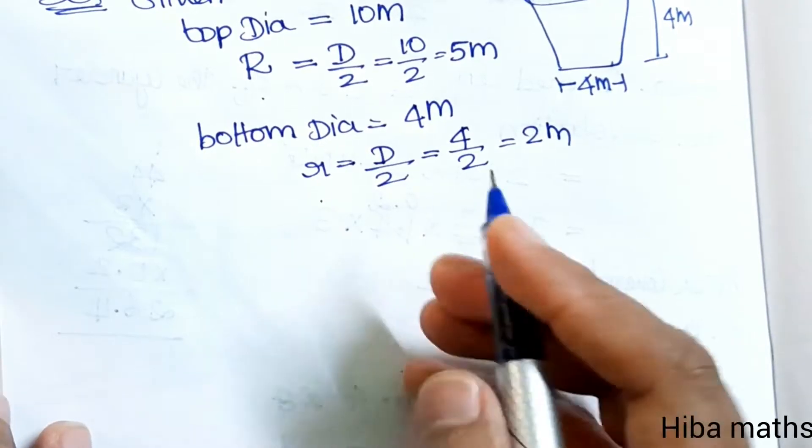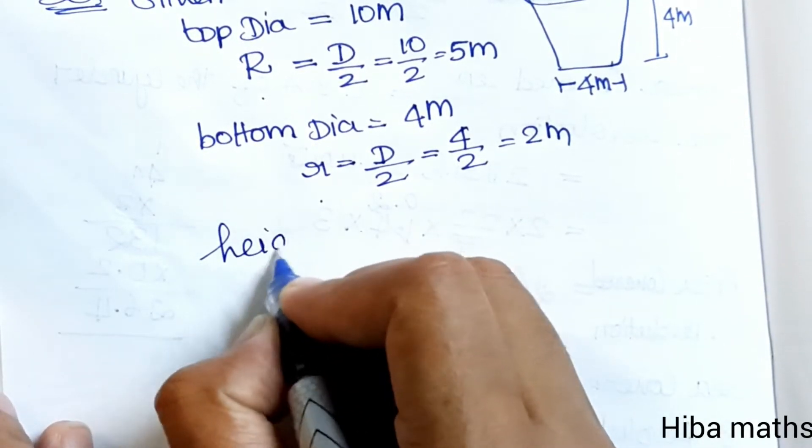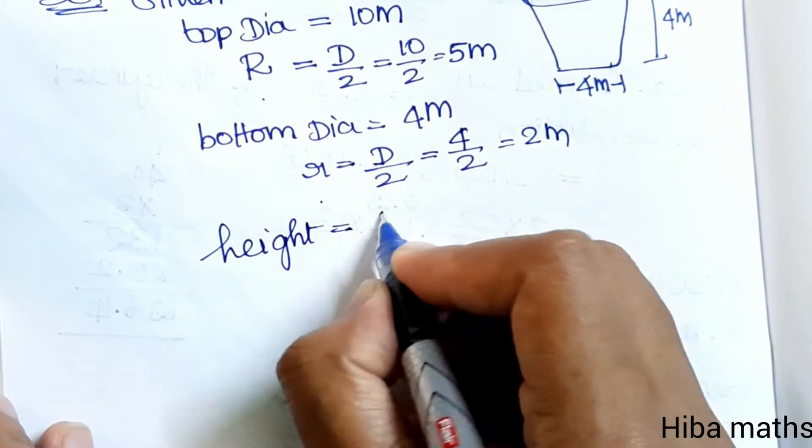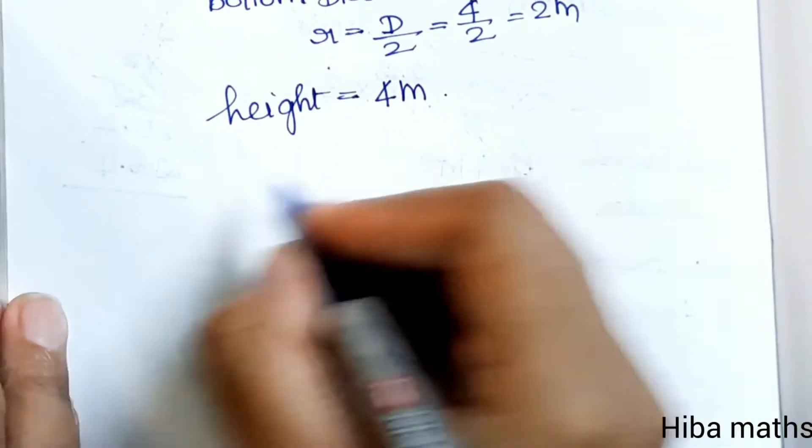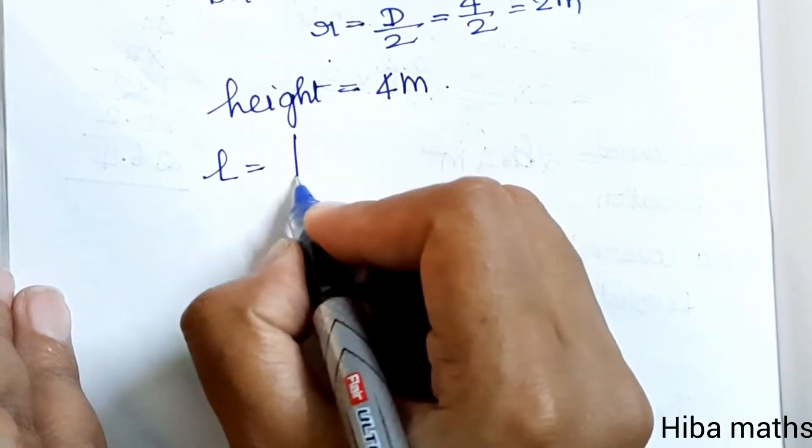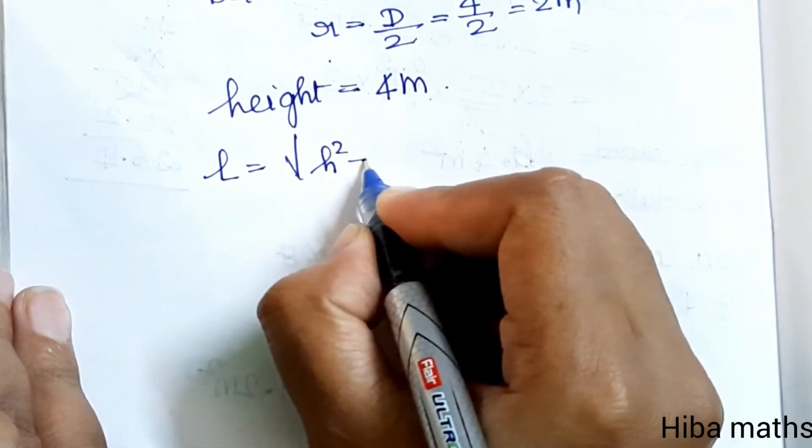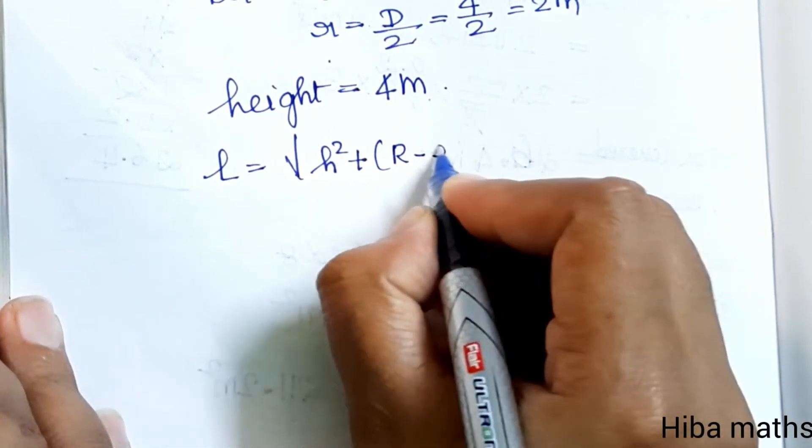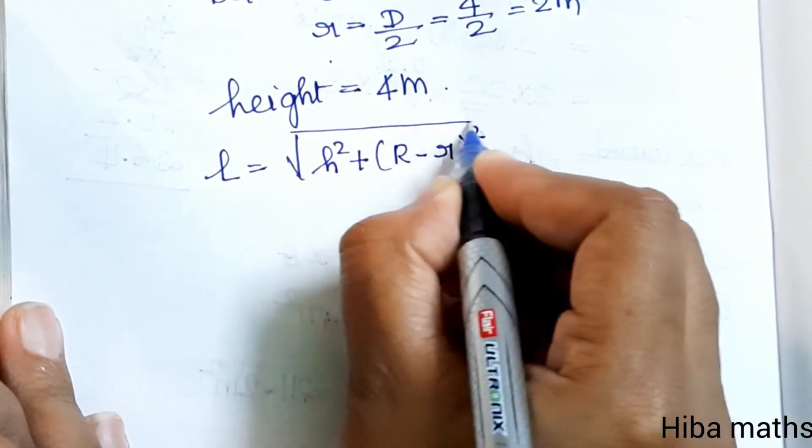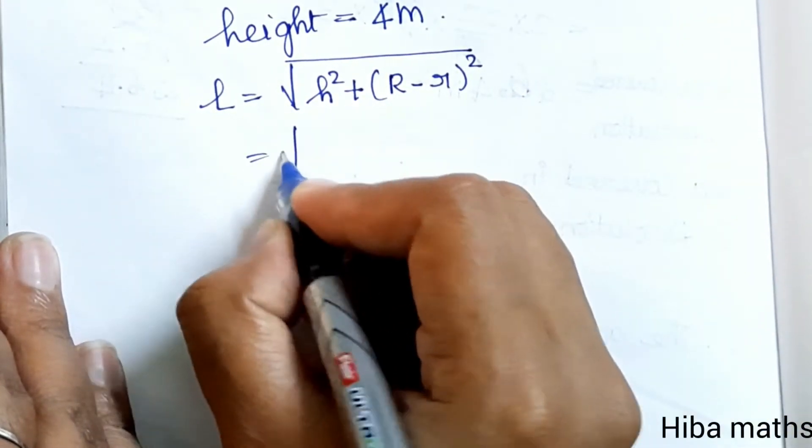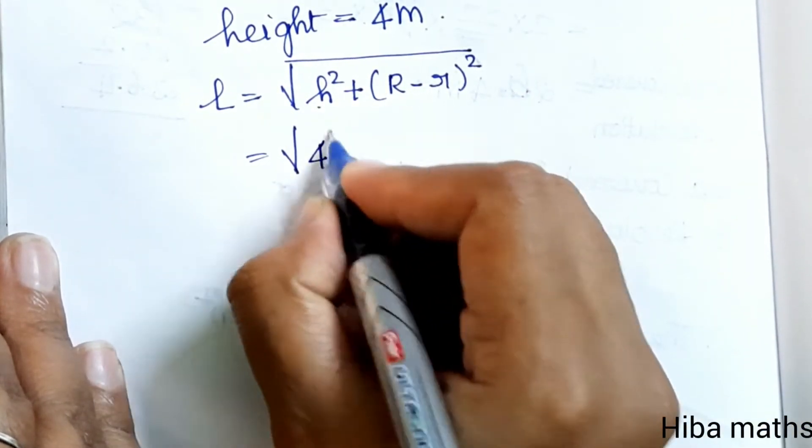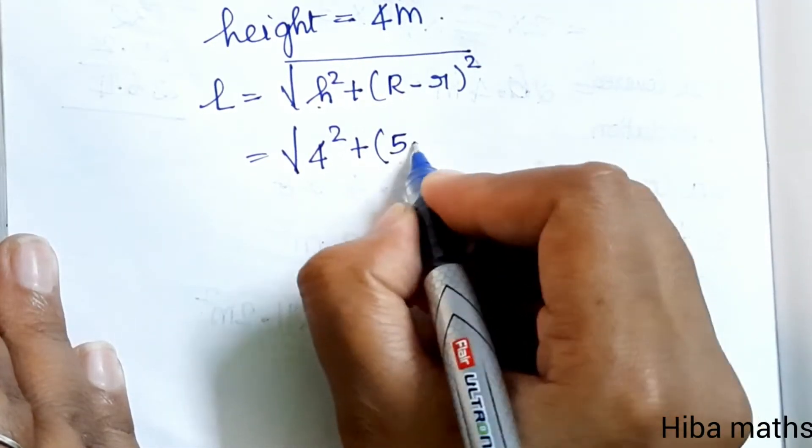Height h is 4 meter. Now we need slant height L. L is equal to the root of h square plus capital R minus small r whole square.